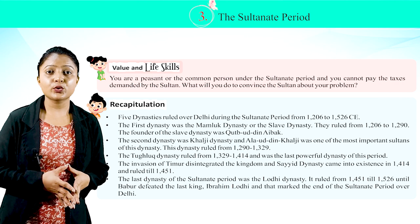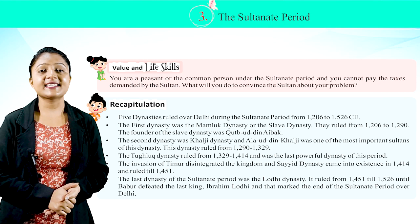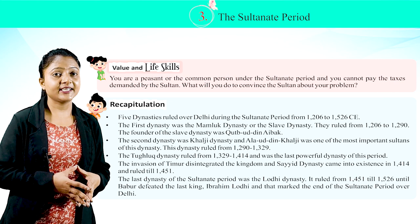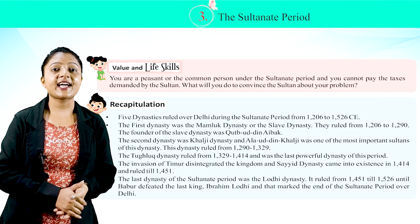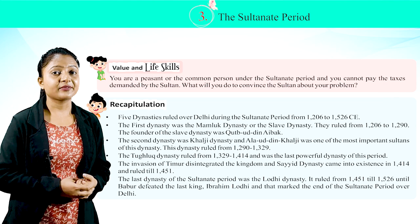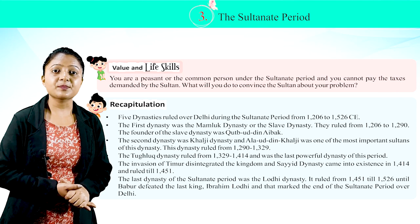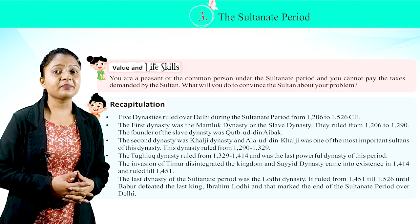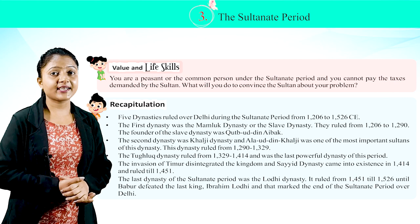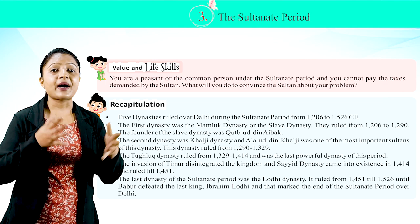Recapitulation: Five dynasties ruled over Delhi during the Sultanate period from 1206 to 1526 CE. The first dynasty was the Mamluk or slave dynasty, founded by Qutubuddin Aibak, ruling from 1206 to 1290 CE. The second was the Khalji Dynasty, with Alauddin Khalji as one of its most important sultans, ruling from 1290 to 1320. The Tughlaq Dynasty ruled from 1320 to 1414 and was the last powerful dynasty. Timur's invasion disintegrated the kingdom, and the Sayyad Dynasty ruled from 1414 to 1451. The last dynasty was the Lodi Dynasty, which ruled from 1451 till 1526, until Babur defeated the last king Ibrahim Lodi, marking the end of the Sultanate period.